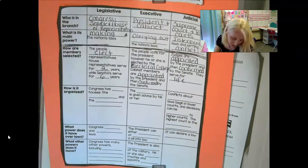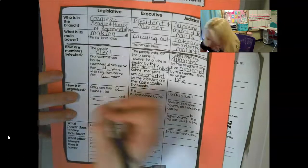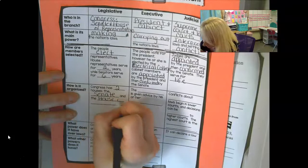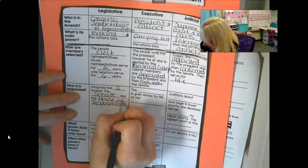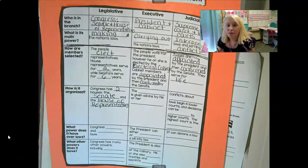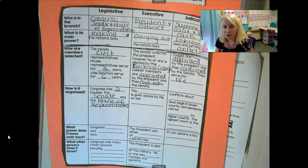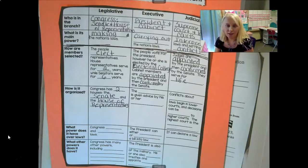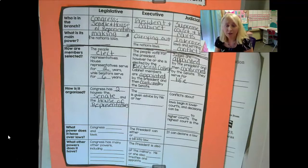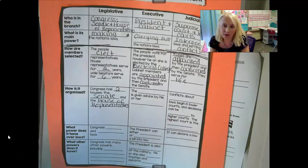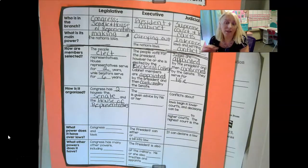Congress has two houses — the Senate and the House of Representatives. Each state has two senators. When you turn 18 and go to the polling booth, you will vote for your senators. The House of Representatives number is determined by the population in each state, so states with higher numbers of people have more representatives. North Carolina has a pretty large population, so we have quite a few. You will only vote for a representative for your area, not all representatives for North Carolina — just the one who represents Pamlico County and surrounding areas.